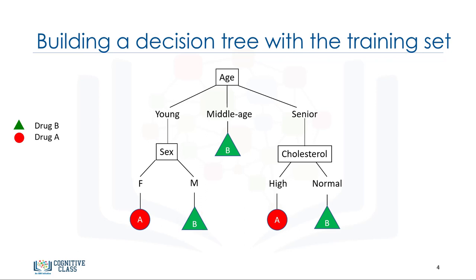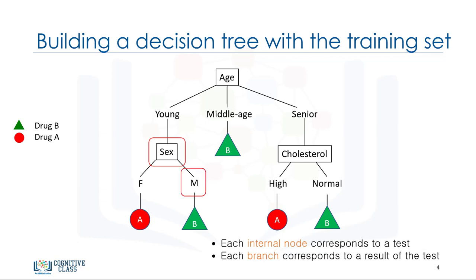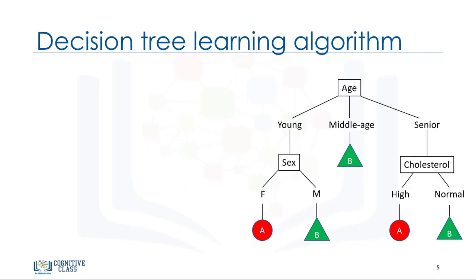As you can see, decision trees are about testing an attribute and branching the cases based on the result of the test. Each internal node corresponds to a test, and each branch corresponds to a result of the test, and each leaf node assigns a patient to a class. Now the question is, how can we build such a decision tree?